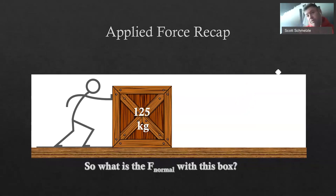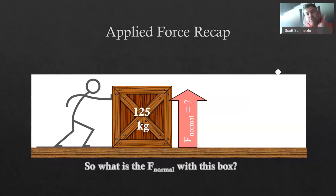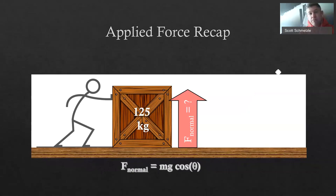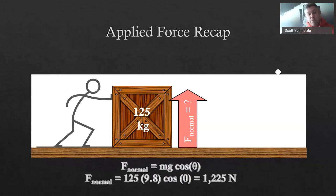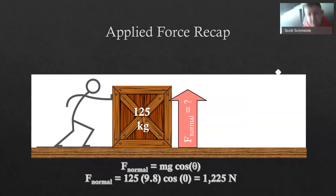Normal force — next part. What is the normal force of this box? For a 125-kilogram box, the surface pushes up against it. That's mg·cos(θ): 125 kilograms, angle is 0, g is 9.8. So 125 times 9.8 times cosine of 0 — cosine of 0 is 1 — gives a normal force of 1,225 Newtons. That's our applied force, how we push stuff forward. This would be considered a pushing problem.